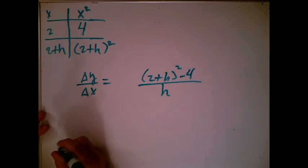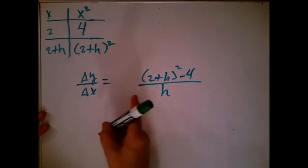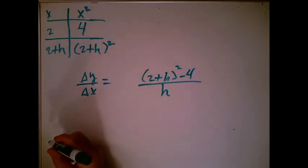Now I want to take the limit. Now why? Because each of these is an estimate, and what we want is the exact value, but we know that when we take the limit of the estimates we get the exact value.